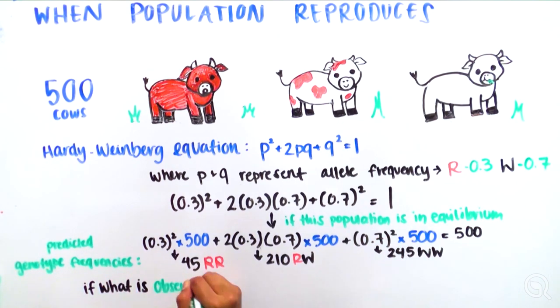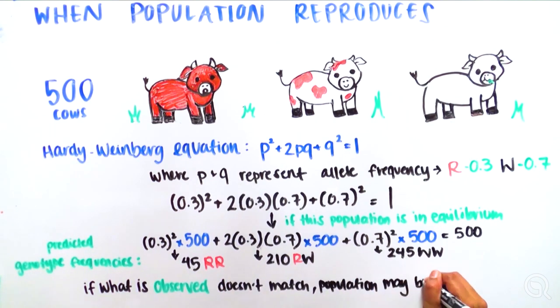If the observed genotype frequencies don't match those predicted by the Hardy-Weinberg equation, then the population is not in equilibrium, which means the population may be evolving.